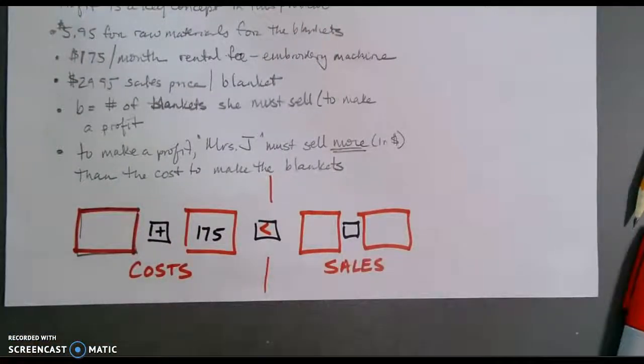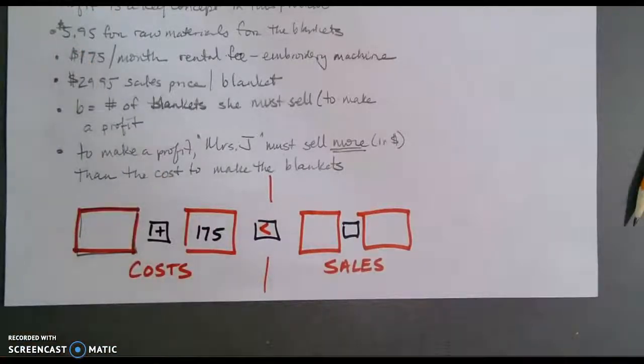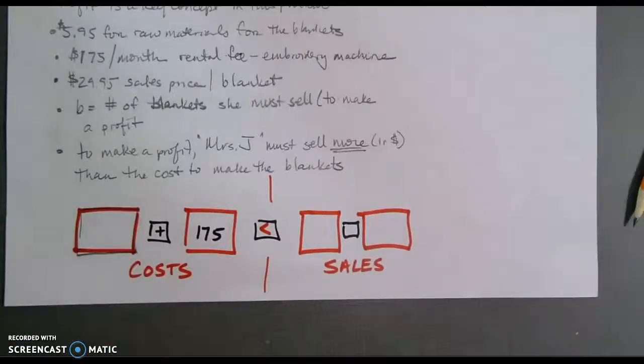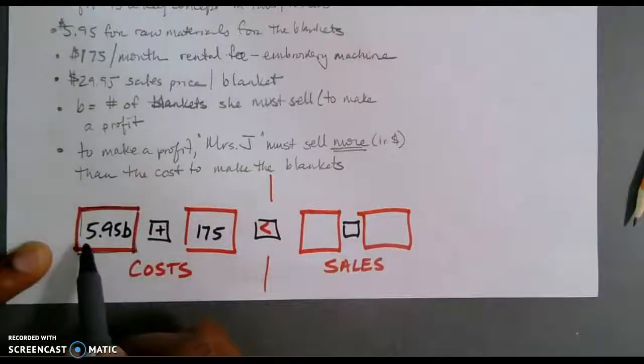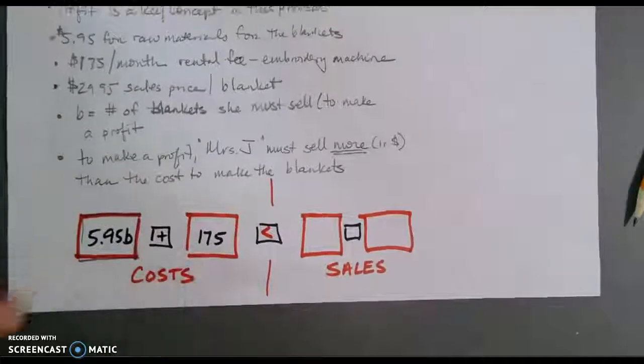Her costs, of course, are tied to the $5.95 for her raw materials. And that will happen per blanket. So, what I am going to do, and I know I keep switching these markers, sorry, that's $5.95B, $5.95 per blanket plus her $175 must be less than what?